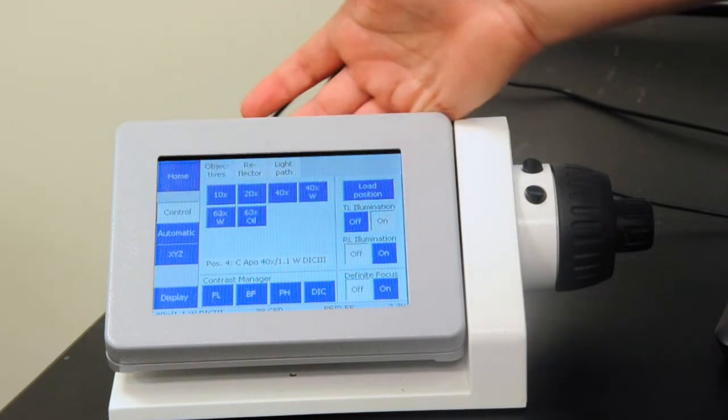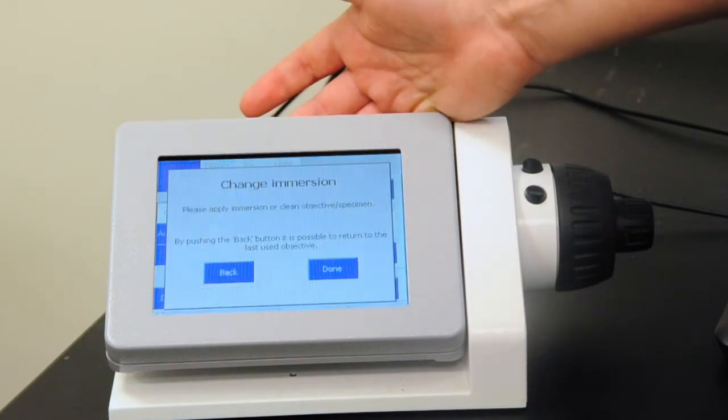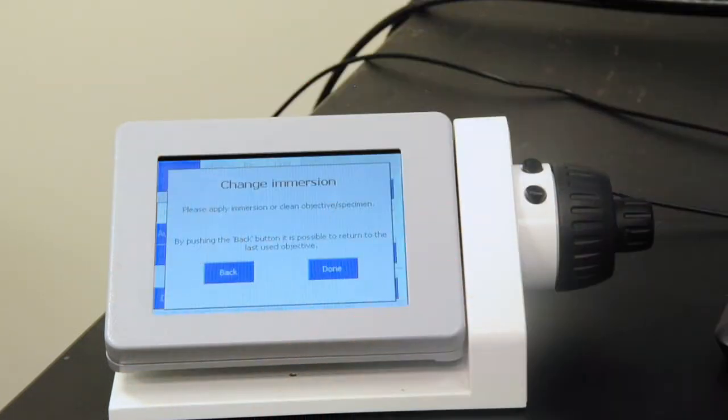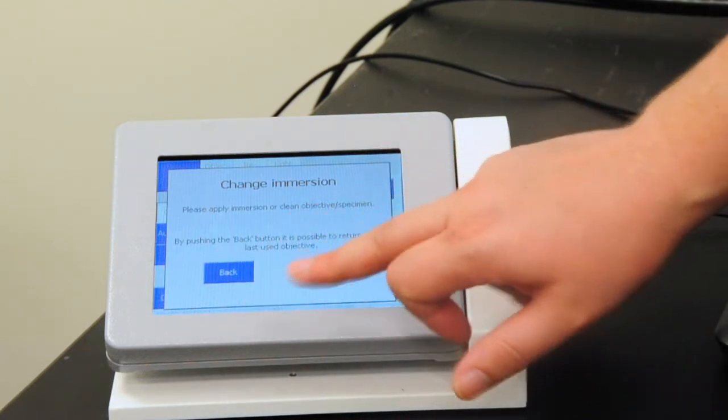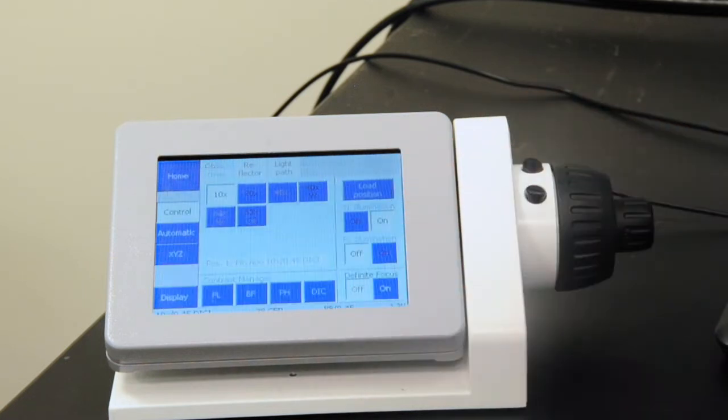First, we have objectives in which we can change the objectives for this. If we're going from a dry objective to immersion objective, we actually have it drop down and ask you, have you done this to ensure that we don't get oil or water on a dry objective. If you don't want to do that, you can press back, or if that's what you actually wanted to do when you cleaned up, press done, and it will rise back up into place.